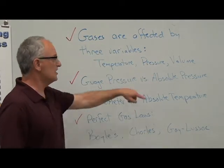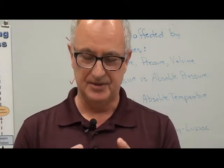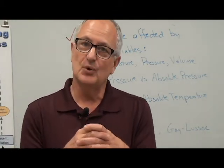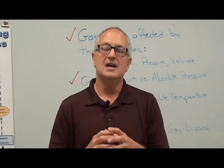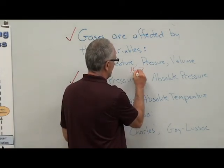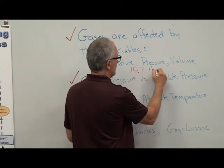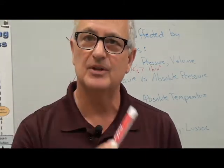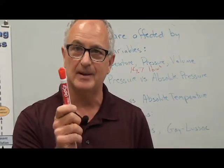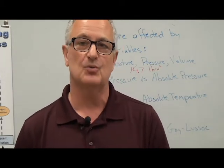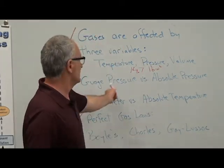Next, gauge pressure versus absolute pressure. If you have an air compressor at home and it says there's 100 psi in it, that is the pressure inside of that gauge inside of the hoses. But that's not the total amount of pressure because we are under pressure from the atmosphere around us. We use the figure of 14.7 pounds per square inch — that is atmospheric pressure at sea level. So if you're ever asked to solve for absolute pressure, you take the gauge pressure, let's say it's 100, add 14.7, and you get a total of 114.7 pounds per square inch.